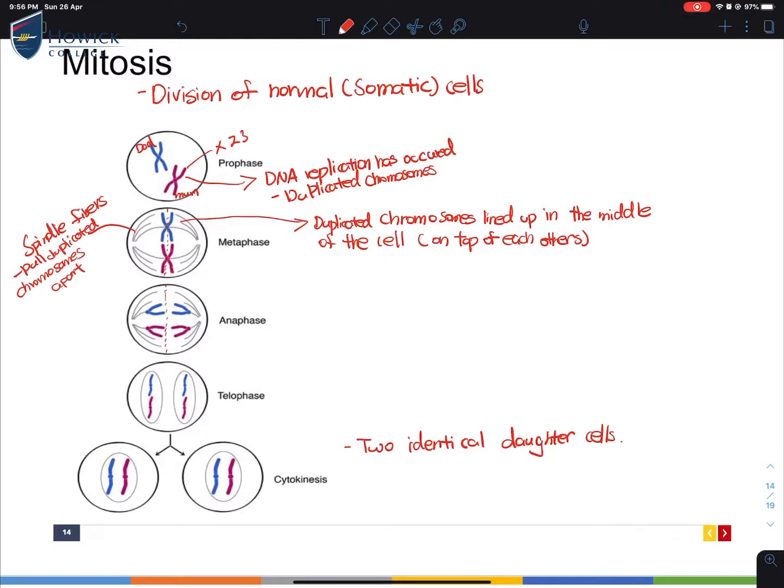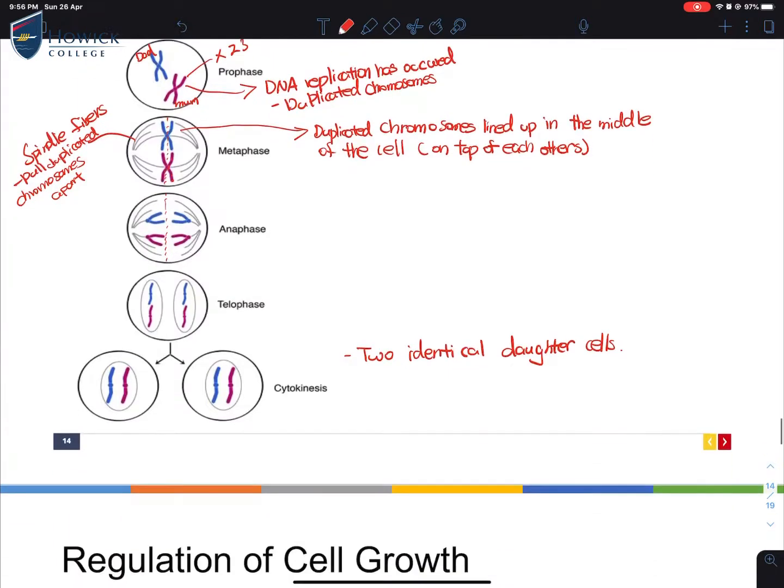In terms of the naming, prophase, metaphase, anaphase, telophase, and cytokinesis, we're not expecting you to remember that. It's not tested. But you do know that there are different stages in mitosis where it begins with 46 chromosomes in total, duplicated after DNA replication, then go into two separate cells after the process of cytokinesis.